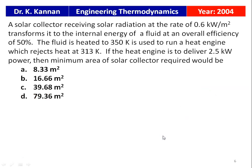Again from the 2004 question paper. A solar collector receiving solar radiation at a rate of 0.6 kW/m² transforms it to the internal energy of the fluid at an overall efficiency of 50%. The fluid is heated to 350 Kelvin and used to run a heat engine which rejects heat at 313 Kelvin. If the heat engine is to deliver 2.5 kW of power, the minimum area of the solar collector required would be: 8.33 m², 16.66 m², 39.68 m², or 79.36 m².